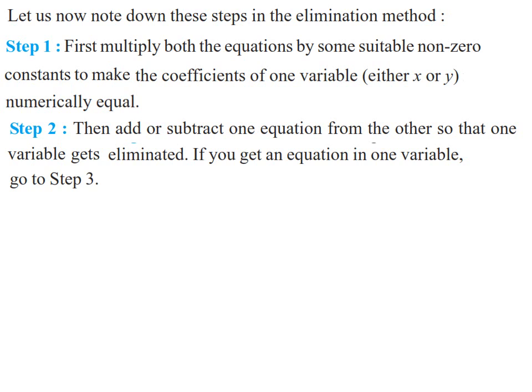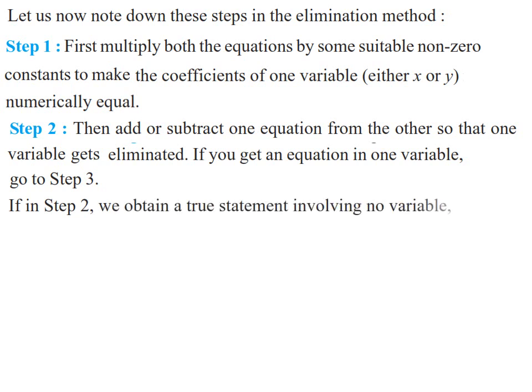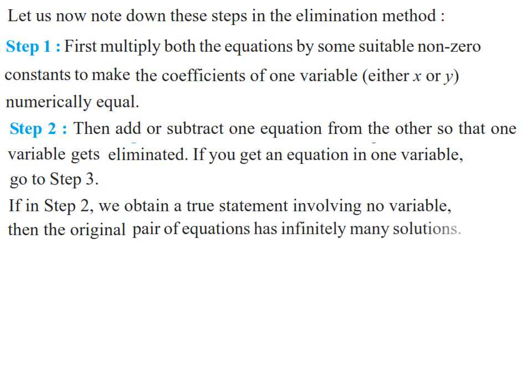In some cases, both variables get eliminated in step 2. First case: in step 2 we obtain a true statement involving no variable — for example, 0 equals 0, 2 equals 2, or 3 equals 3. These are mathematically true statements. In this case, the original pair of linear equations has infinitely many solutions.